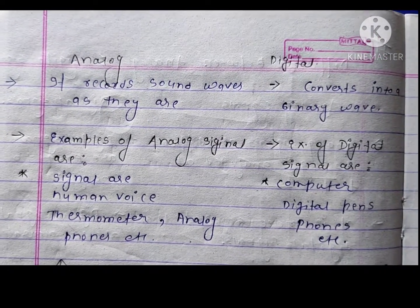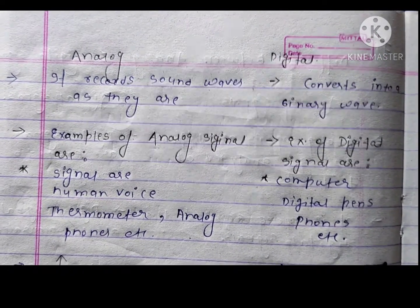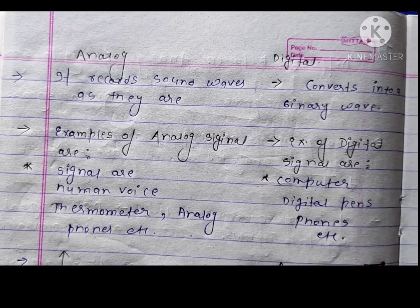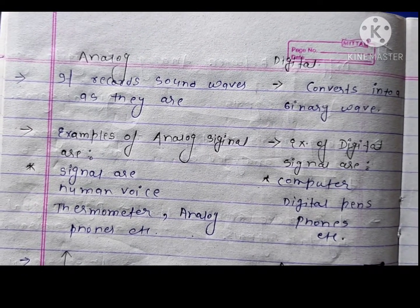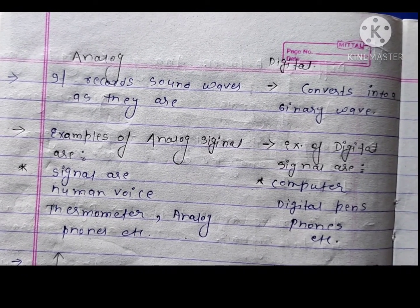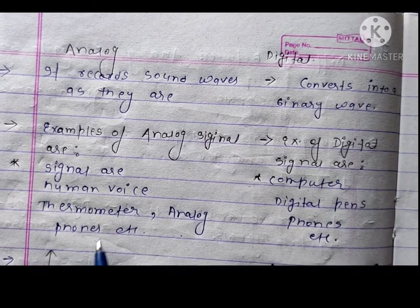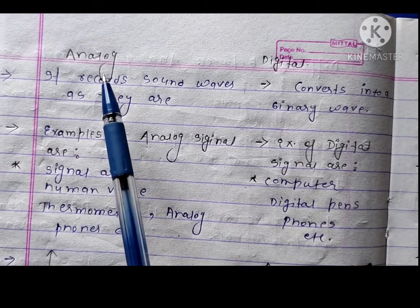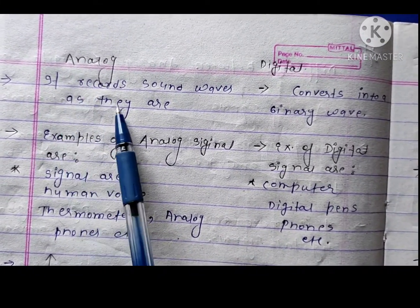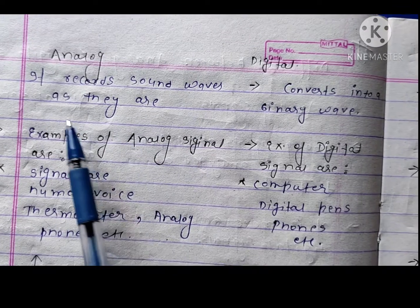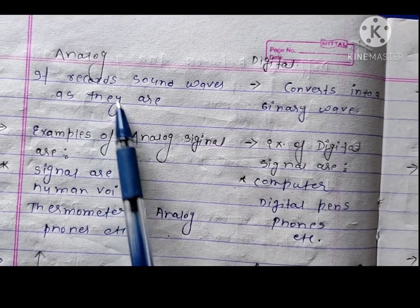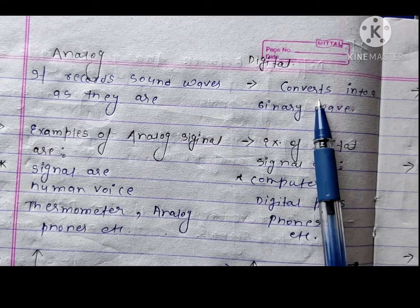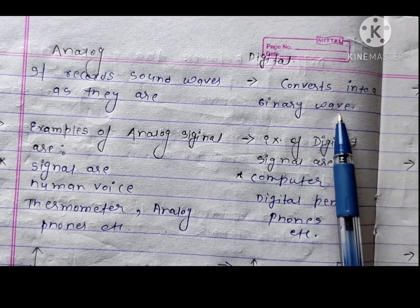This is the second part of the difference between analog signal and digital signal. Please watch the first part — the link is in the description. Let us start: analog signal records sound waves as they are, but digital signal converts sound waves into binary waves.